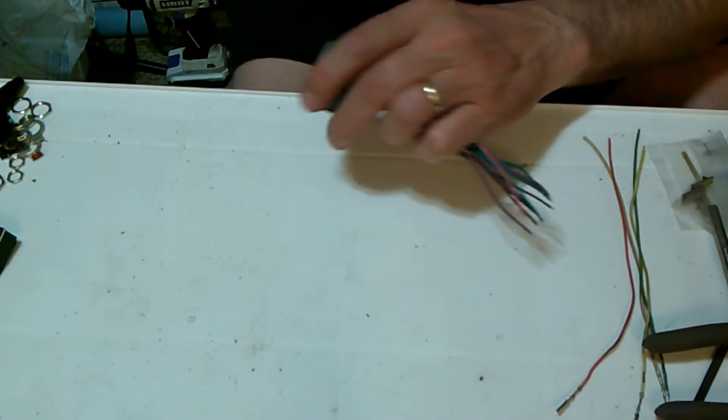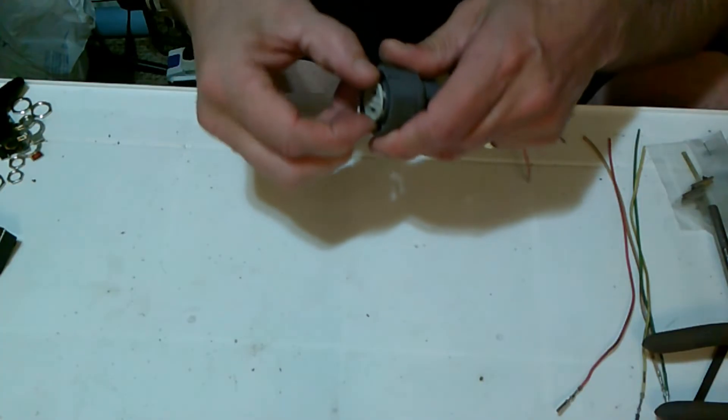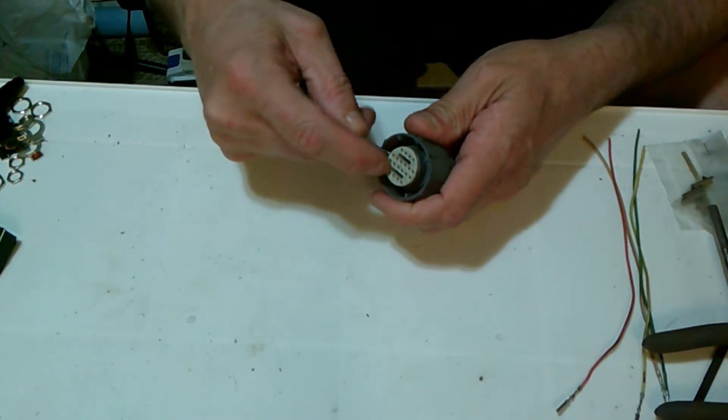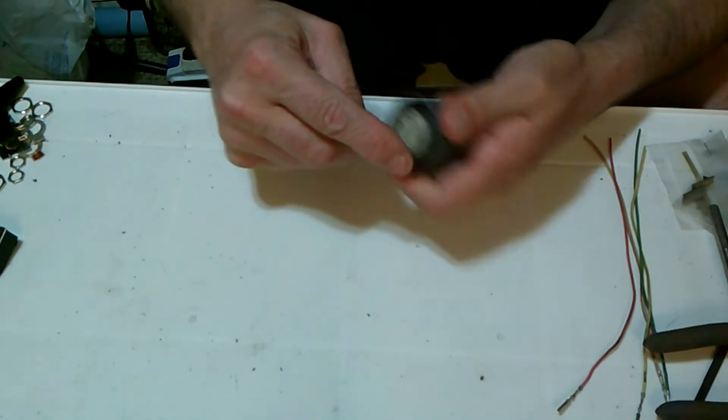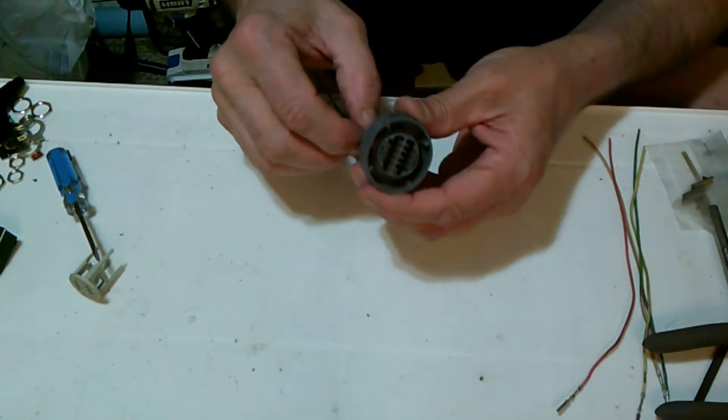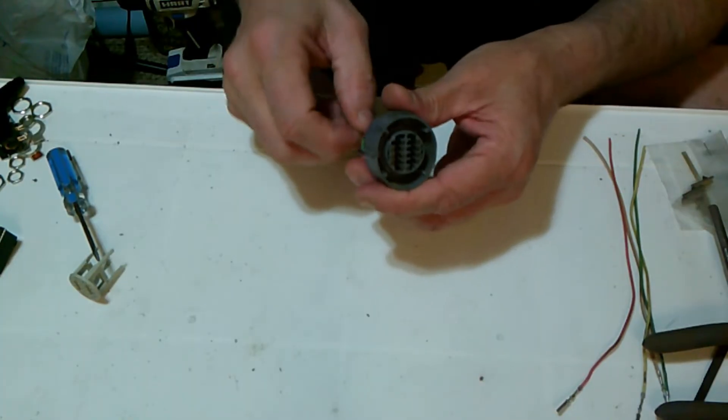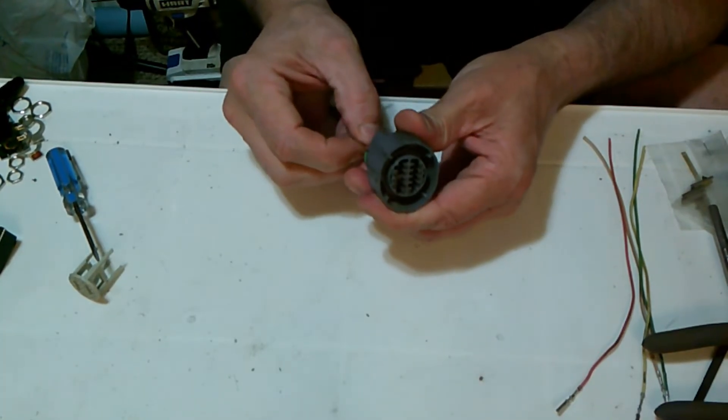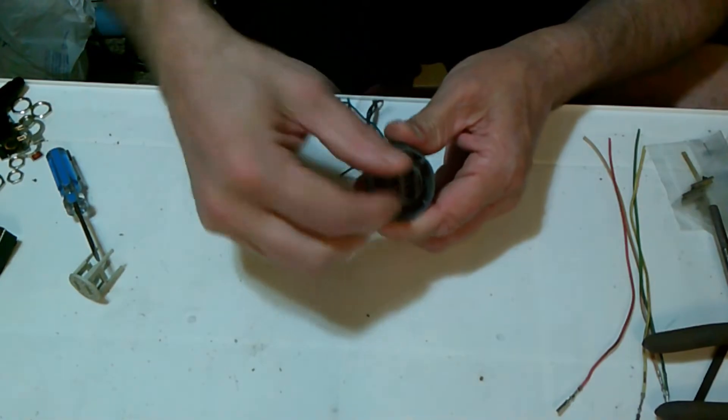To remove the pins, there's a gray cap in front. I've already got this one halfway out because I don't want to look dumb on video. Just gradually pry that cap off, and then if you just want to remove your wires, you can push from behind and pull them out.